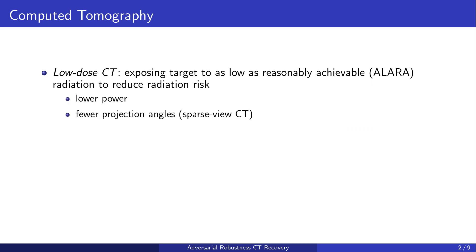This can be done by reduced power settings to reduce the total number of X-ray photons, or by recording measurements from fewer projection angles — i.e., sparse view CT. Low-dose reconstruction is affected by increased noise level in the low-power setting and severe ill-posedness under sparse view measurements, meaning there can be many valid solutions for the same measurement.